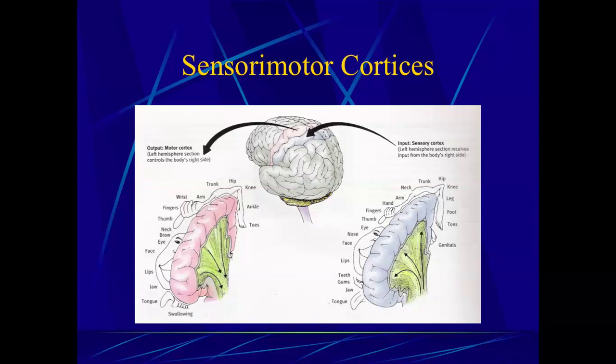There is one exception. If you look next to the toes on the somatosensory cortex, there are the genitals — but in the motor cortex, they're not there. Why does it deviate from the classic organization of the body? We don't know for certain. But when people find foot massages to be sensual, perhaps the cross communication between the feet and the genitals at the somatosensory cortex is the explanation.